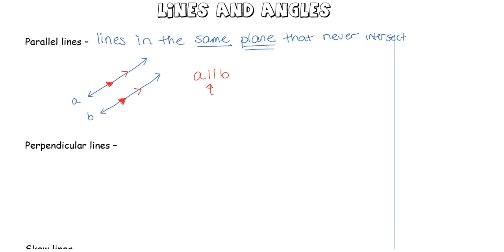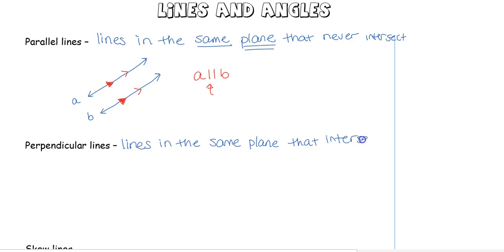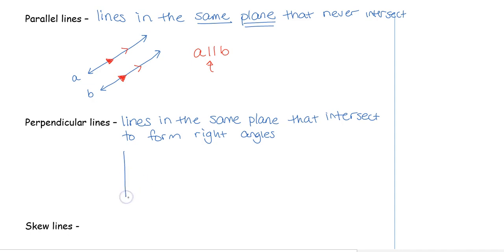Perpendicular lines are lines that are also in the same plane, and these are going to intersect to form right angles. Any two lines in the same plane that come together to form right angles are formed by perpendicular lines. Here's line A and line B — it's a line, it continues forever. For this notation, I would write that line A is perpendicular to line B.